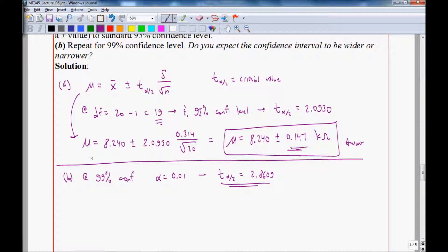And then we plug into the equation again. So from this equation, we end up with mu equal 8.240, plus or minus 0.201 kiloohm.